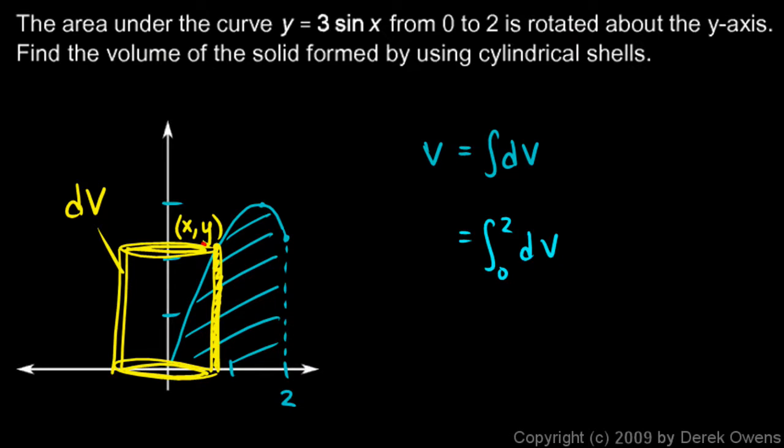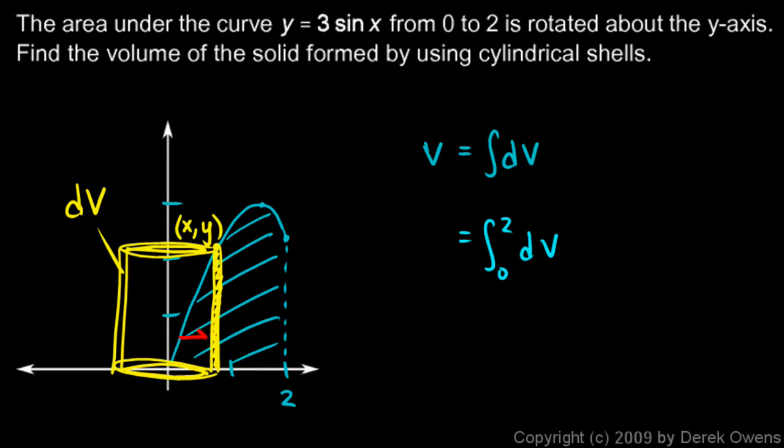comes from the circumference of the shell, and the height of the cylindrical shell there is the height here. And then the thickness, the thickness of the cylindrical shell is our dx right here. So let's write those in. This is going to be 2 pi times the radius, and the radius is x.